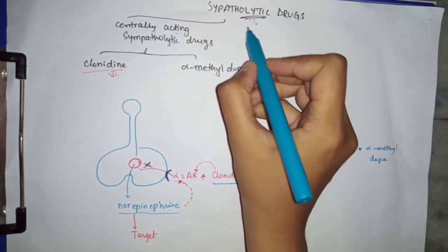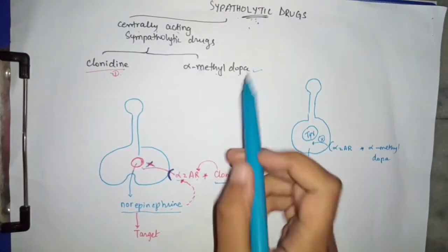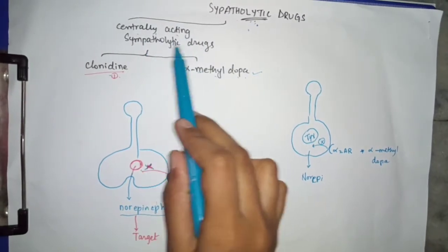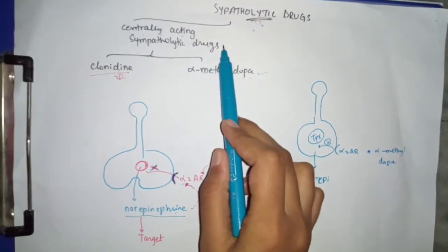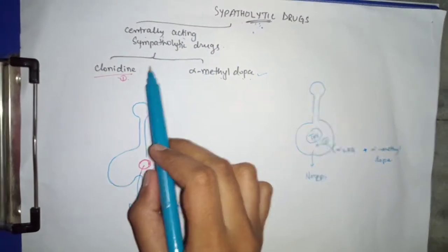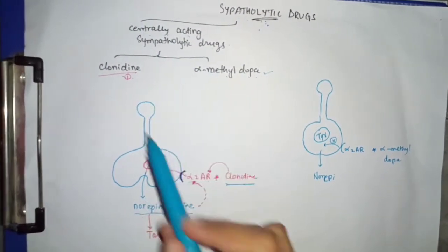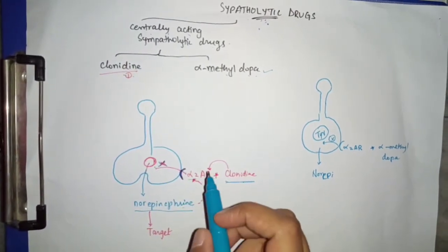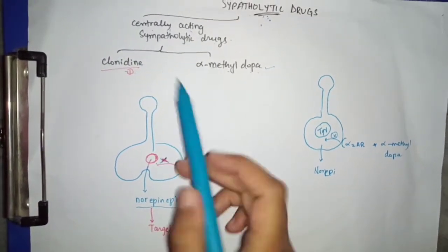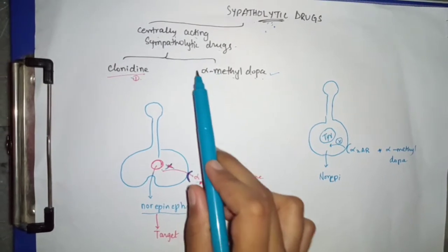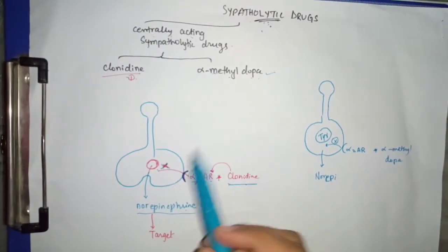The first class of drug among this group is the centrally acting sympatholytic drug. We'll explain the background and then go into the detail of the mechanism of action of centrally acting sympatholytic drugs.